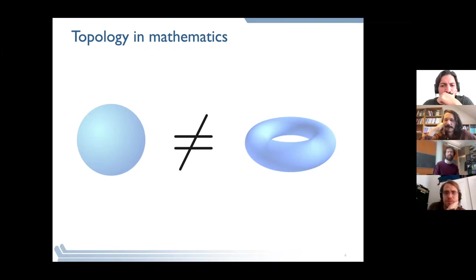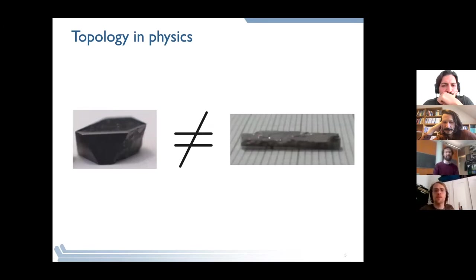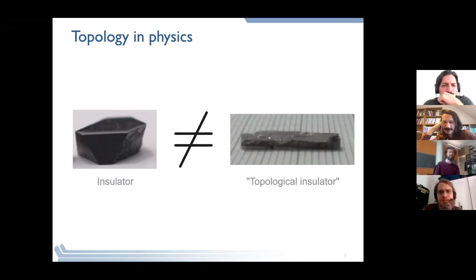Smoothly deforming means you don't penetrate the clay and make a hole. Without making holes, you cannot go from a sphere to a donut, which makes them topologically distinct. You can define topological invariants like the number of holes to separate things into different topological classes. You can also apply these ideas to physics.